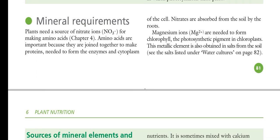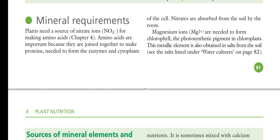Today we will discuss the mineral requirements of plants. Plants need a source of nitrate (NO₃⁻) and nitrite (NO₂⁻) for making amino acids, which are used to make proteins. Amino acids join together by peptide bonds to form a polypeptide chain, and ultimately a protein, which is needed to form enzymes and the cytoplasm of the cell.